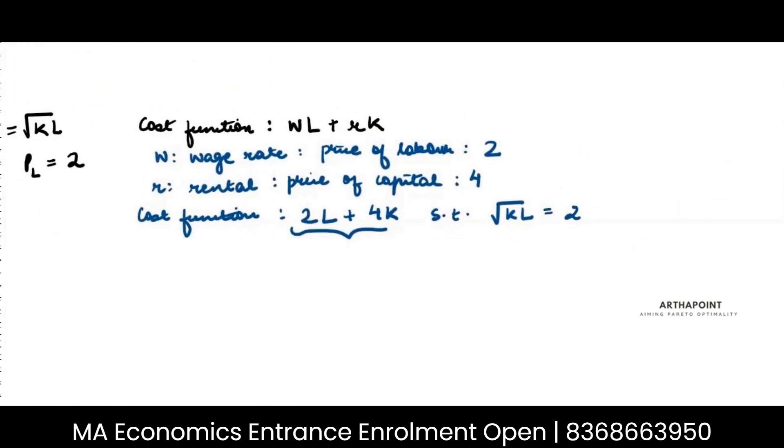There are again two approaches to take this. Either as we have seen you form a Lagrange, so you can say to minimize 2L plus 4K plus lambda 2 minus root KL. Or you simply use the cost minimization condition. Both will give you the same result.